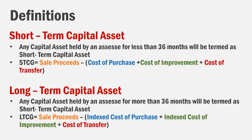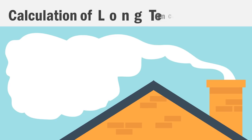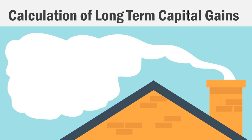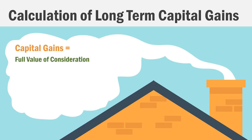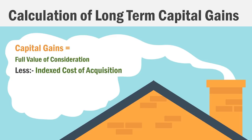For long-term capital assets, the gain is the sale price minus the indexed cost of purchase and the indexed cost of improvement, minus the cost of transfer. The indexed cost means you adjust the purchase value to today's date. Suppose you bought an asset 3 years ago — we need to do indexing to express that value in today's terms.